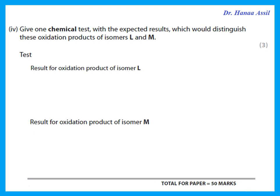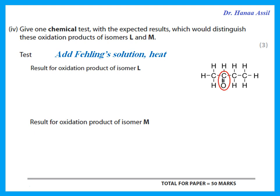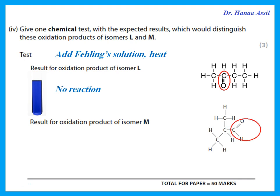L is the secondary alcohol in the straight chain — when oxidized it gives a ketone. The oxidation product of L was a ketone and of M was an aldehyde. To distinguish between aldehydes and ketones, add Fehling's solution or Benedict's solution and heat. The ketone (from L) gives no reaction — the solution remains blue. But the aldehyde (from M) reacts and gives a brick-red precipitate.